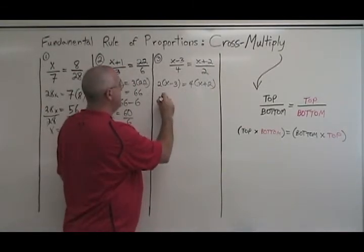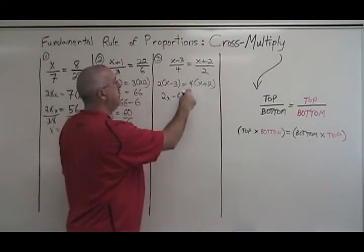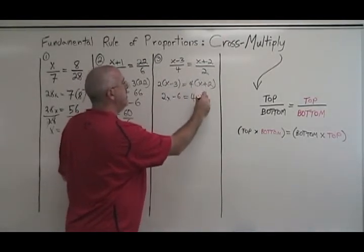Multiplying, 2 times x is 2x. 2 times negative 3 is minus 6 equals 4 times x, 4x. 4 times 2 is 8.